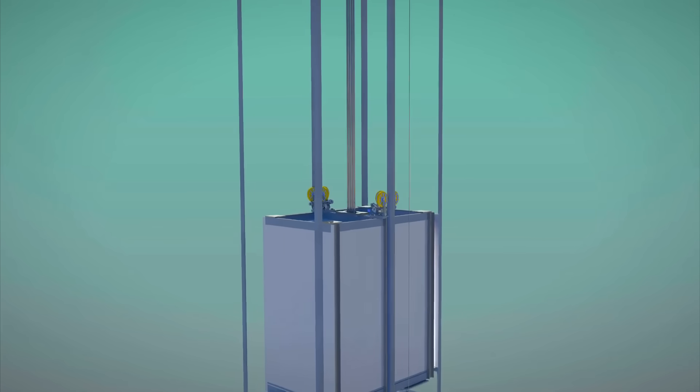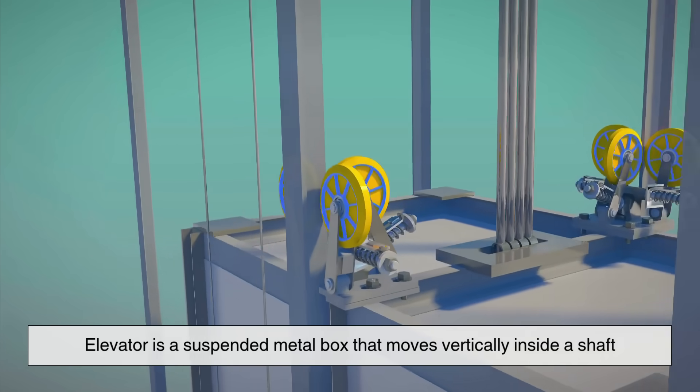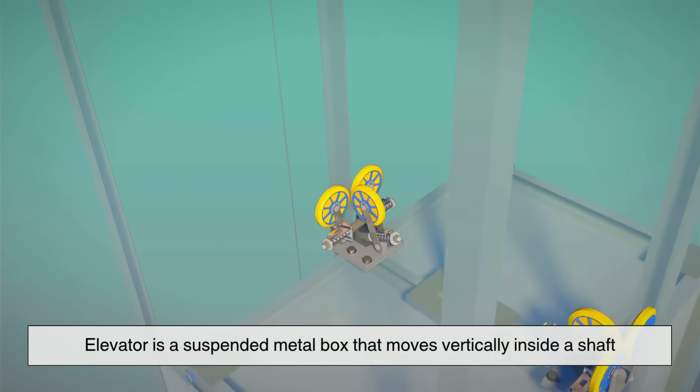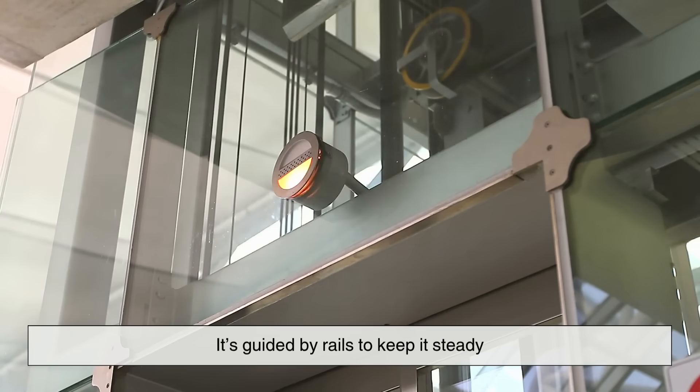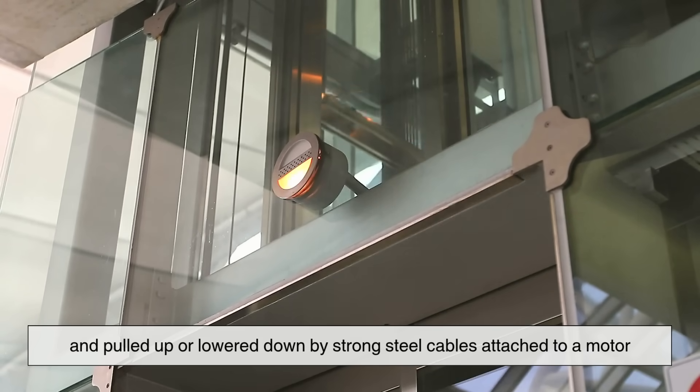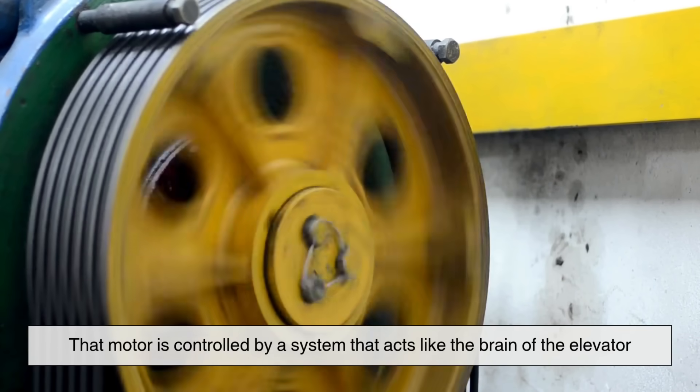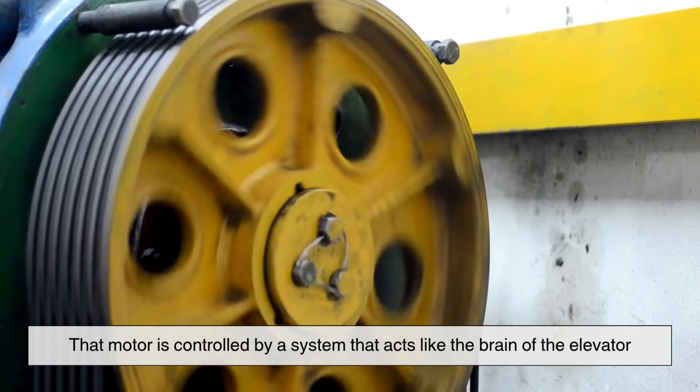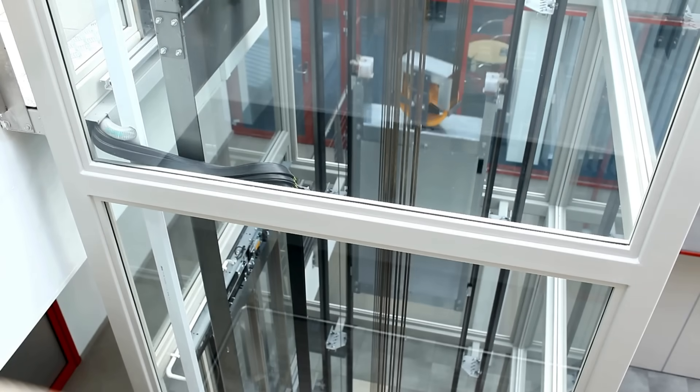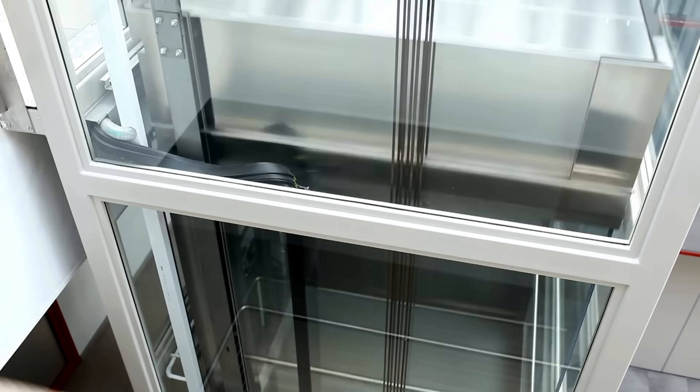Let's start from the beginning. At its core, an elevator is a suspended metal box that moves vertically inside a shaft. It's guided by rails to keep it steady and pulled up or lowered down by strong steel cables attached to a motor. That motor is controlled by a system that acts like the brain of the elevator, receiving commands, monitoring movement, and ensuring everything happens safely and smoothly.